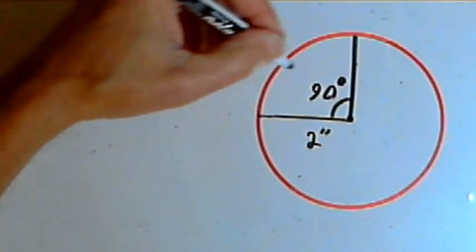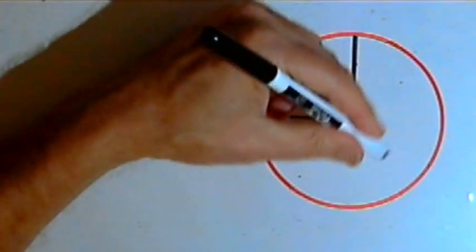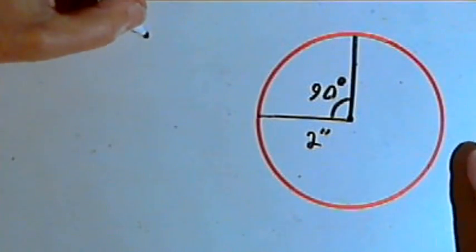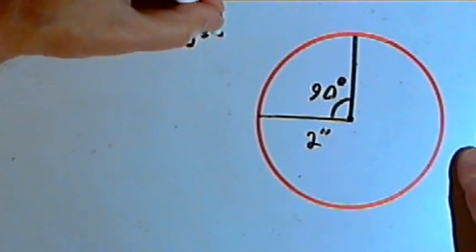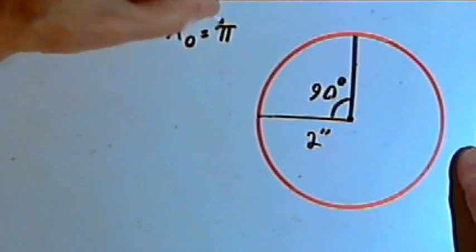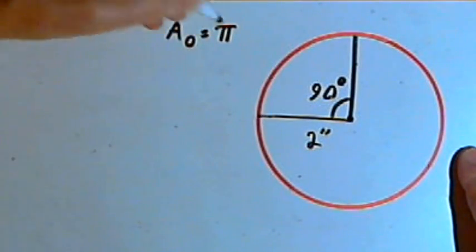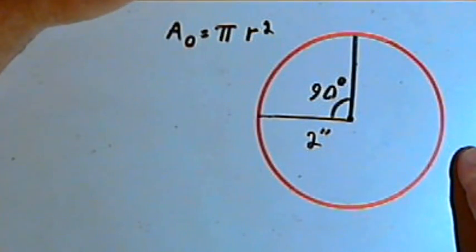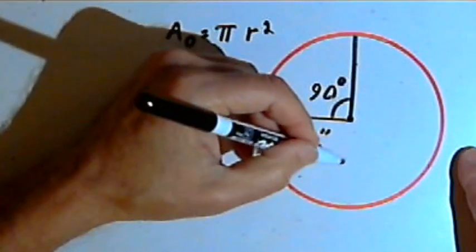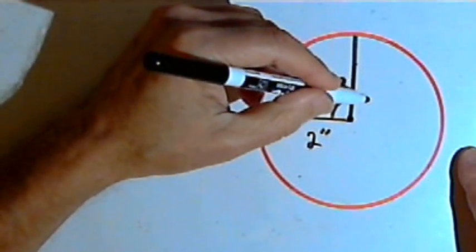The first thing I want to do is remember what the area of the entire circle is. So for any circle, the area is going to be pi, which is about 3.14, times the radius squared. So I could use that formula, pi r squared, to get the area for this entire circle.